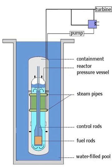The light water reactor is a type of thermal neutron reactor that uses normal water, as opposed to heavy water, as both its coolant and neutron moderator. A solid form of fissile elements is used as fuel. Thermal neutron reactors are the most common type of nuclear reactor, and light water reactors are the most common type of thermal neutron reactor. There are three varieties of light water reactors: the pressurized water reactor, the boiling water reactor, and the supercritical water reactor.